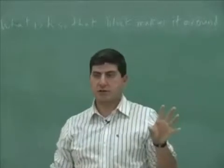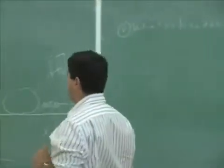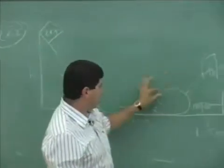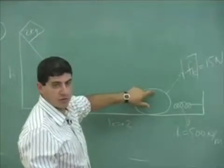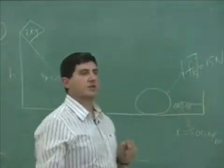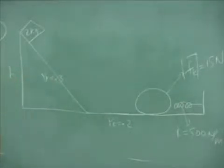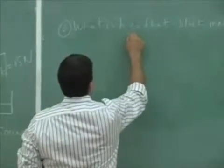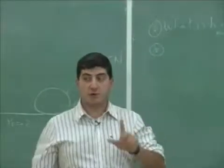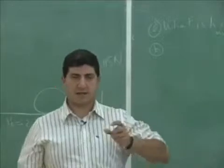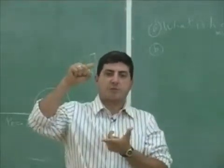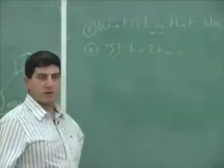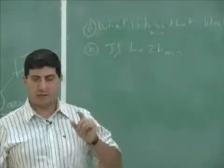After you find that out, you don't want the block to barely make it around the circle. You want the block to experience a better velocity there. So we can ask, what is h min? Then we can say, what if the height is twice that? So if h equals twice h min, then what will be the velocity of the block at the top of the circle?